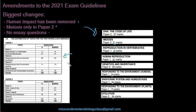You can check the paper structure out in the exam guidelines — I'll put the link in the description. Reproduction in vertebrates is still in paper one, human reproduction is still there, responding to the environment in humans and in plants, and the endocrine system and homeostasis are also still in paper one. It's just meiosis that has been removed from paper one. You can also see the percentage weighting of each topic. For paper two: meiosis, DNA, genetics and inheritance, and evolution — basically just the mark allocation has changed.